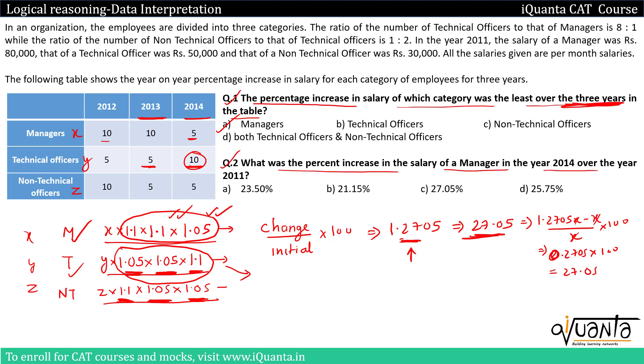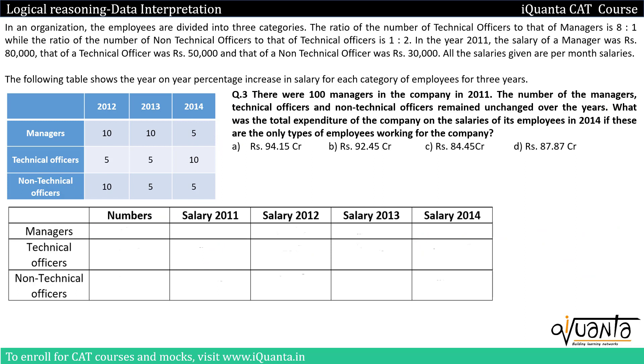For Q2, the percentage increase in salary of a manager in 2014 over 2011 was already calculated as 27.05%, so option C is the correct answer.